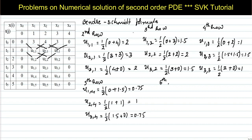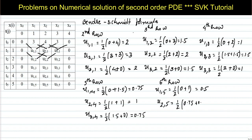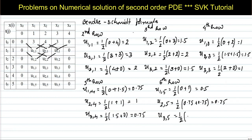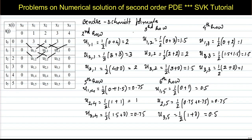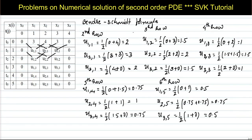For the sixth (final) row: u(1,5) = (1/2)(0 + u(2,4)) = (1/2)(1) = 0.5. u(2,5) = (1/2)(u(1,4) + u(3,4)) = (1/2)(0.75 + 0.75) = 0.75. u(3,5) = (1/2)(u(2,4) + 0) = (1/2)(1 + 0) = 0.5. These are the required values in the table for the numerical solution of the one-dimensional heat equation.